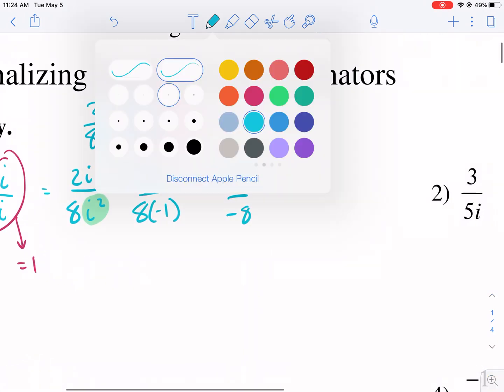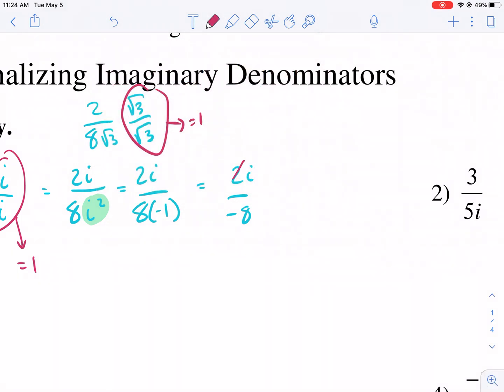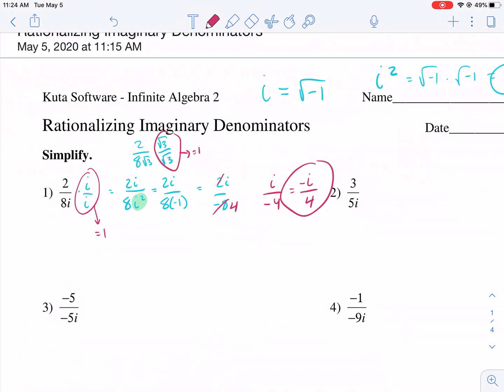We can simplify a little bit further. We can cancel out the 2 with the 8, and we get negative 4 on the bottom. So we have i over negative 4. I like to personally write the negative in the top. I think it makes it a lot easier.